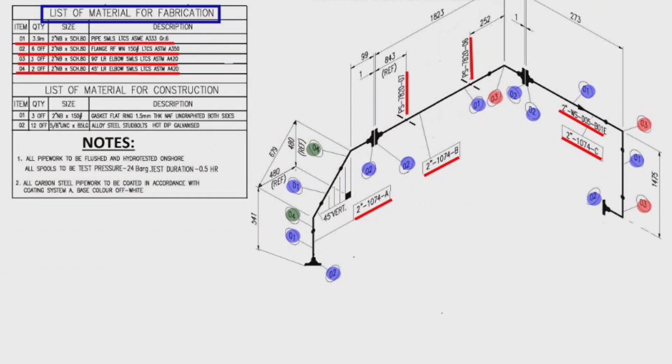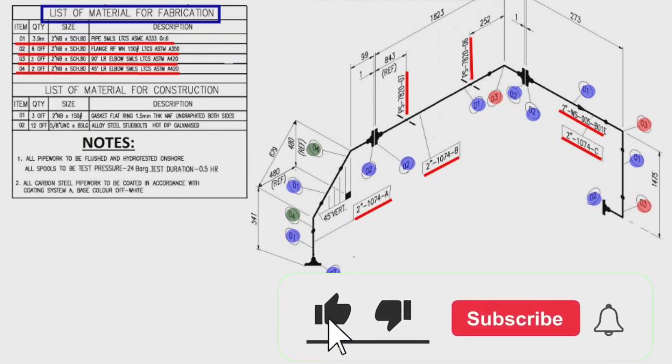We learned the materials which are used on this pipe drawing during fabrication. Some materials are needed during the installation of this pipeline offshore or at sites, the list of those materials is given here.